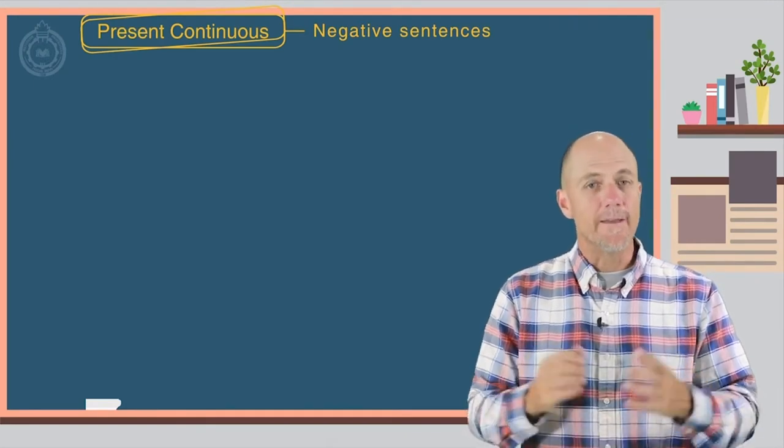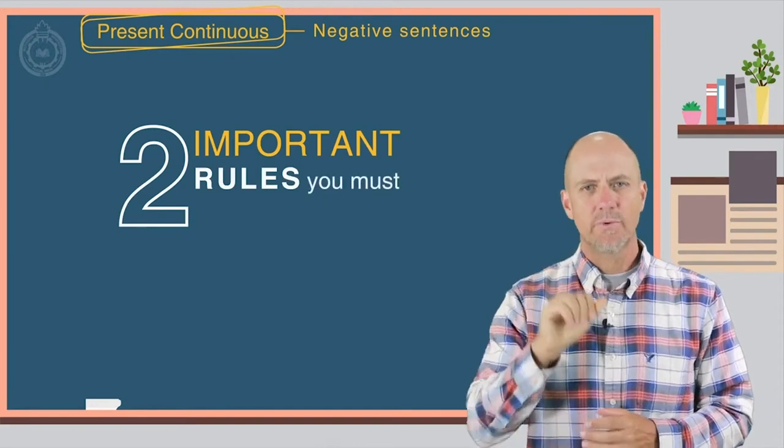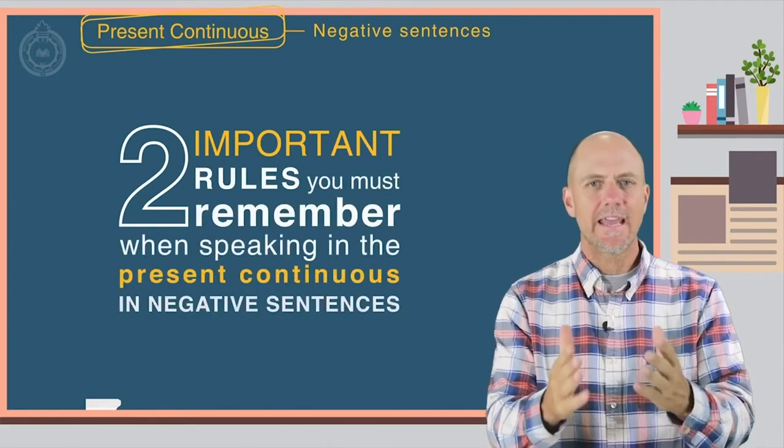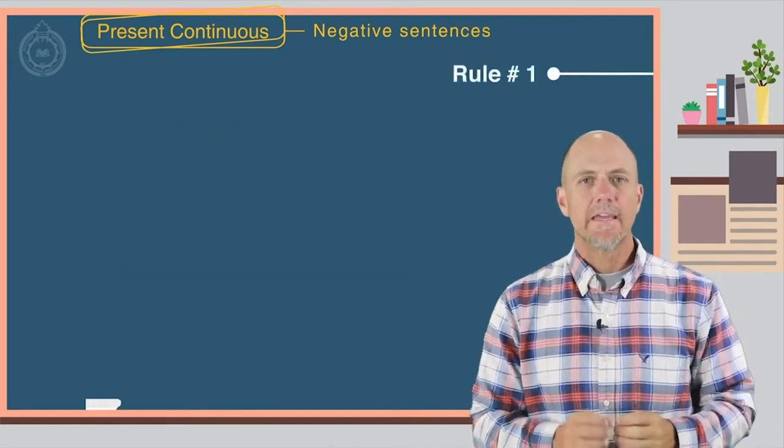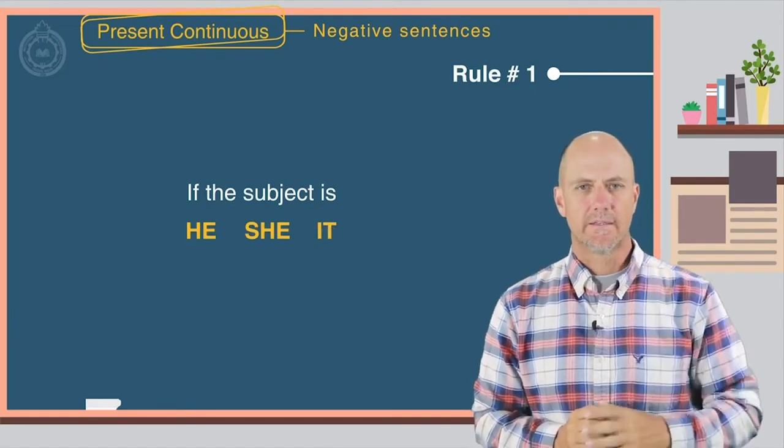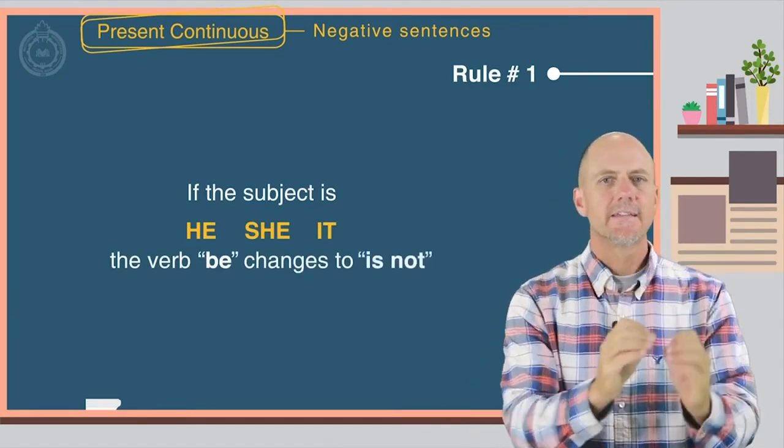Okay. There are two very important rules you must remember when speaking in the present continuous in negative sentences. Rule number one: if the subject is he, she, or it, the verb be changes to is not.